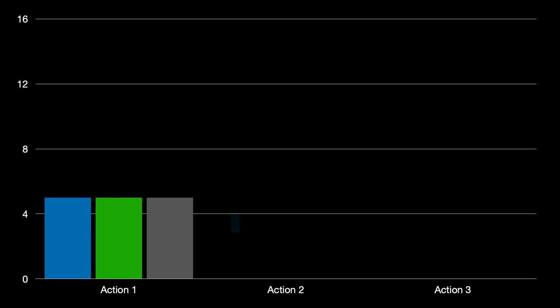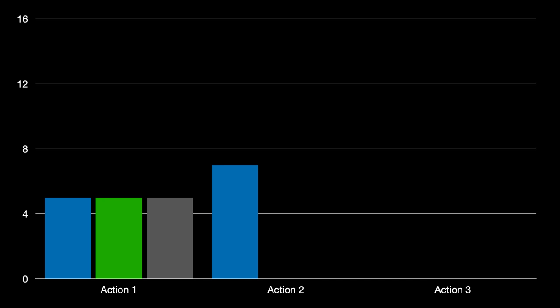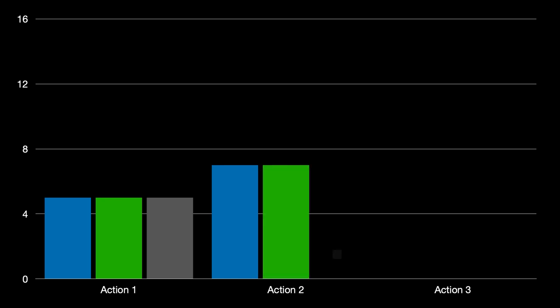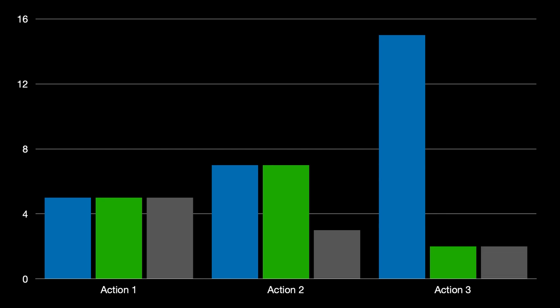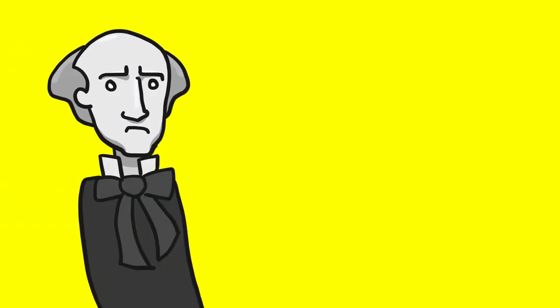Suppose we consider action two. Action two: person A gets seven units of happiness, as well as person B, but then person C only gets three units of happiness. And then action three: person A gets 15 units of happiness, while person B and person C only get two. So here's the question — according to Mill, which action should you take?